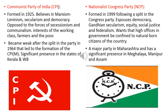Communist Party of India (CPI) was formed in 1925 and believes in Marxism, Leninism, Secularism and Democracy, opposed to the forces of secessionism and communalism. The interests of the working class, farmers and the poor are the major area of concern. It became weak after a split in 1964 that led to the formation of CPI-M. It has a significant presence in Kerala and West Bengal. Right now it is not in power in West Bengal but is in power in Kerala.